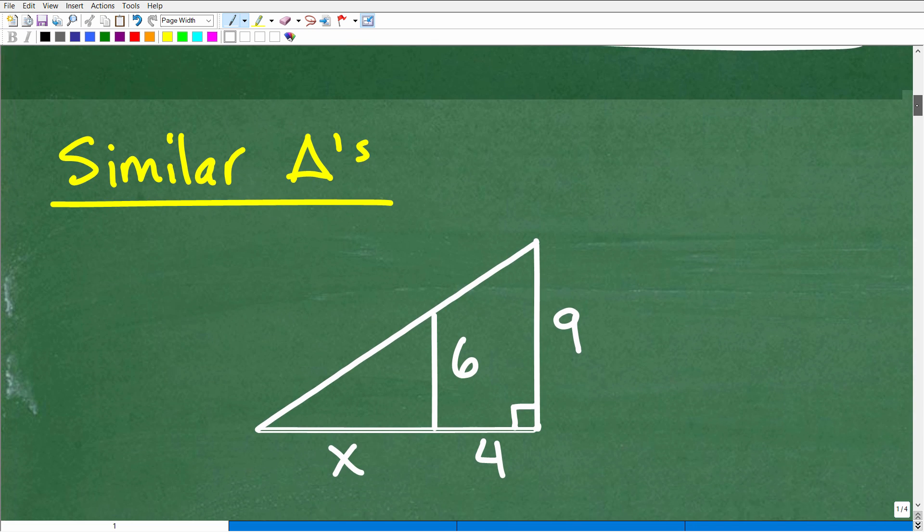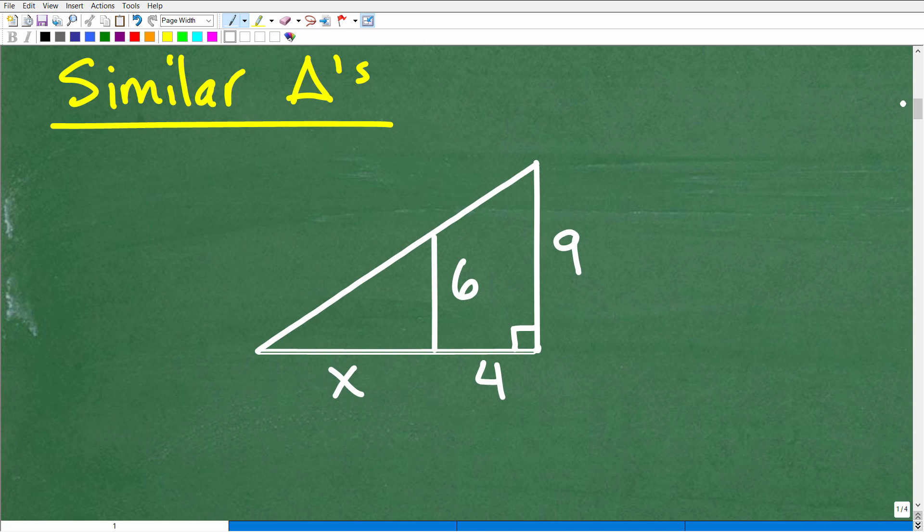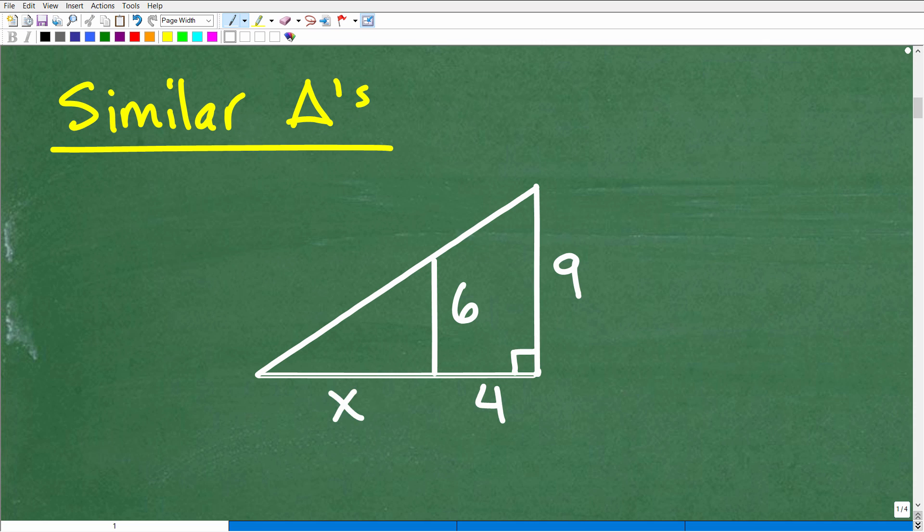So let's go ahead and get into the actual problem. And the main idea of this is to recognize that in fact, we are dealing with two similar triangles. So let's go ahead and put our little right triangle thing right here. So now why are these similar? Well, you have different theorems and postulates that determine whether two triangles are similar.